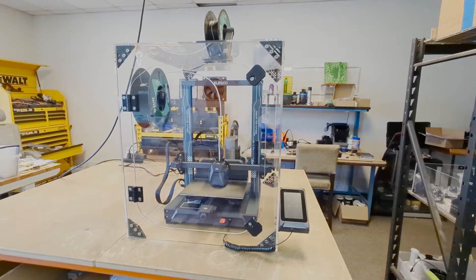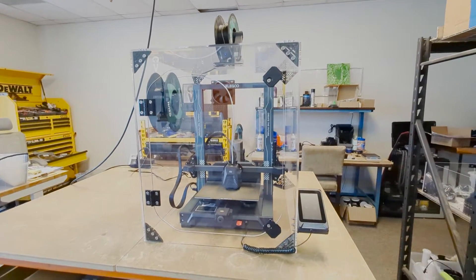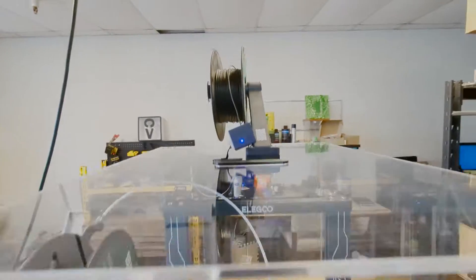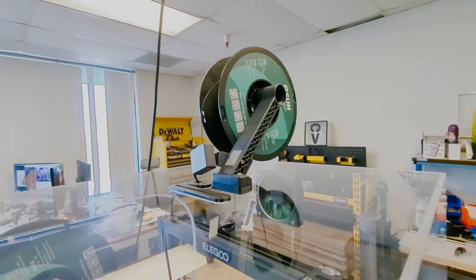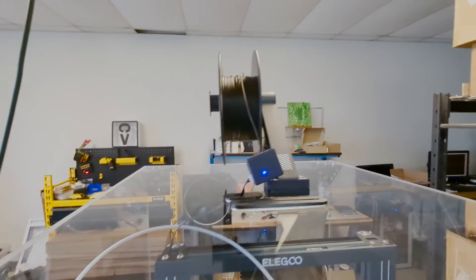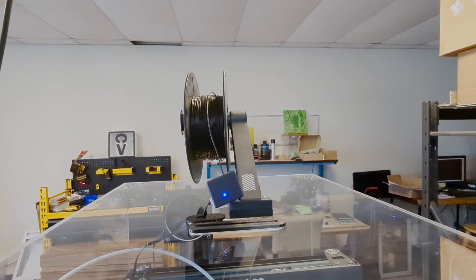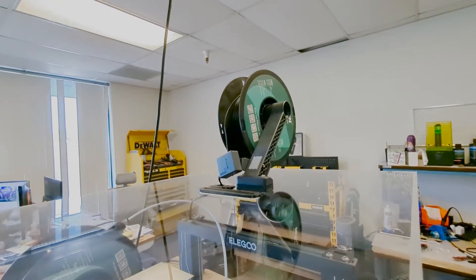This particular enclosure that we make for the Elegoo, some of the things that we did to tailor-fit this is on the top here, we actually made it so that you can run your spool holder and filament sensor up on top. And so then that makes it easy to just feed in some filament right from the top and get going. It's actually a pretty easy setup.